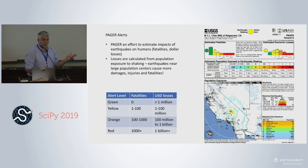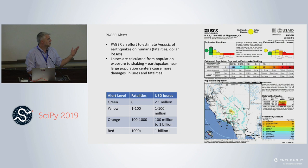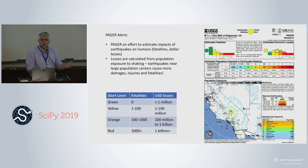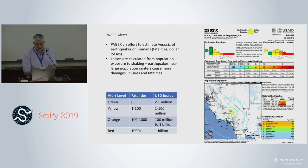Our customers are FEMA for domestic response, the Office of Foreign Disaster Assistance for global response, and the military. The intent is: if you're an analyst with FEMA and you get an alert on your phone in the middle of the night and it's green, you can probably go back to bed. If it's yellow, you might want to wake up and start making phone calls. If it's red, get dressed and go into the office. Because these are models — not ground-collected information — the goal is to kick off the process of response and get things started.